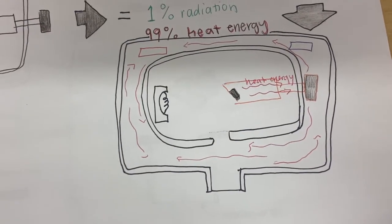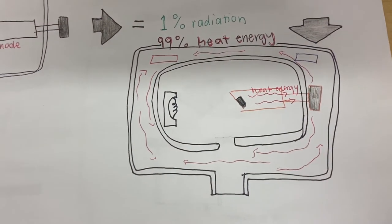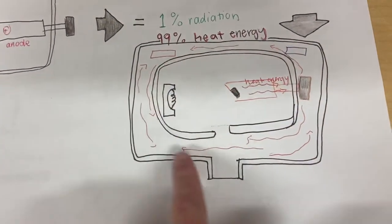And then, you can see here that the copper stem surrounding the target will absorb 99% of heat energy and disperse it around the tube that has insulating oil in it.